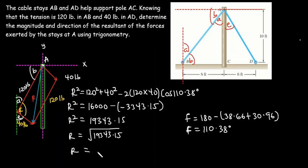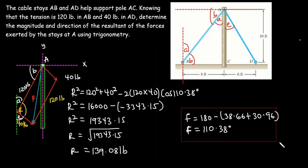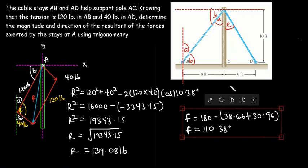The resultant force R equals 139.08 pounds. Now we need to find the direction, or the angle that the resultant force makes with the x-axis.